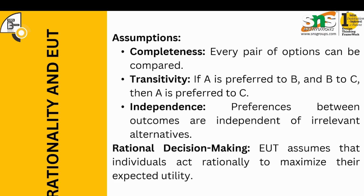The second assumption is transitivity, which follows simple logic: if A is preferred to B and B is preferred to C, then we can conclude that A is preferred to C. For example, if somebody prefers tea to coffee and coffee to milk, then it is obvious that the person prefers tea to milk. Similarly, if I prefer my father over my mother in a direct comparison, then transitivity implies a clear preference ordering.